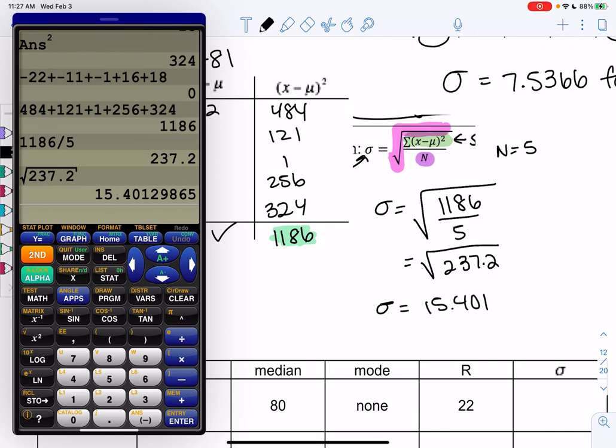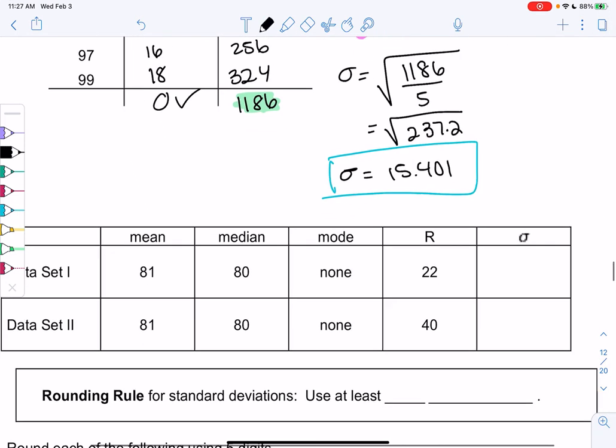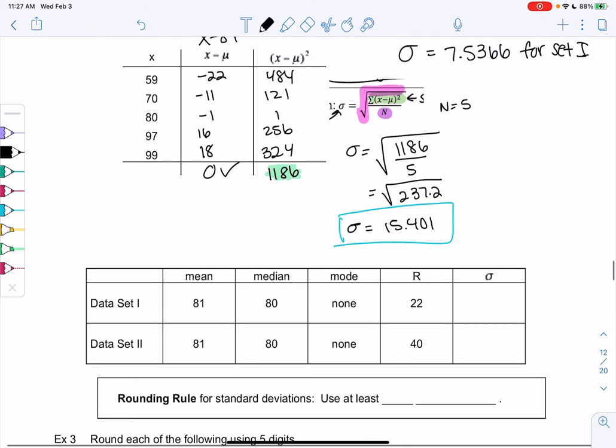So there we go. For data set 1, we got a sigma or standard deviation of 7.5366. And then data set 2 is almost double. We got 15.401 because it's more spread out. So again, I don't really know the individual numbers, but I know that data set 2 is more spread out. So that's our big takeaway.